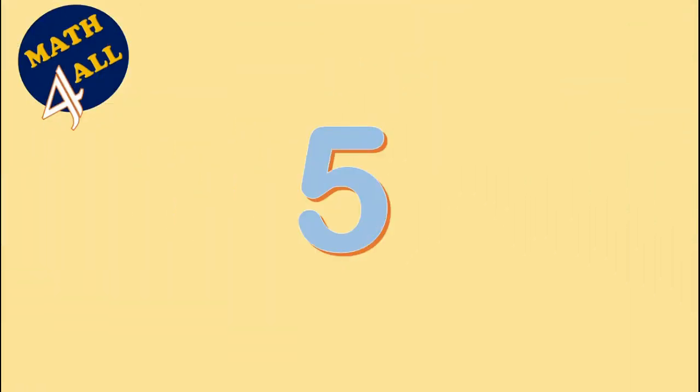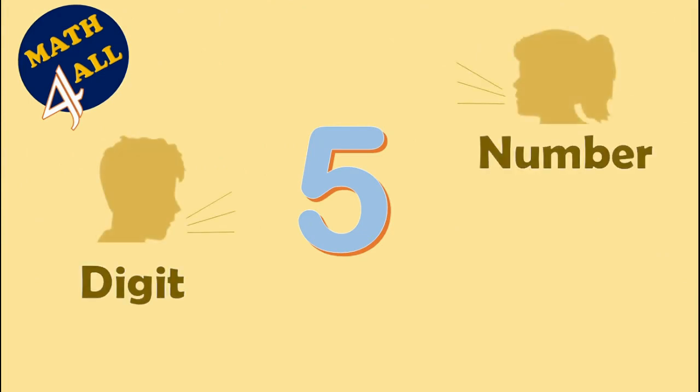What is this? What do you see? Five is a digit. Five is also a number. I think it's a numeral.